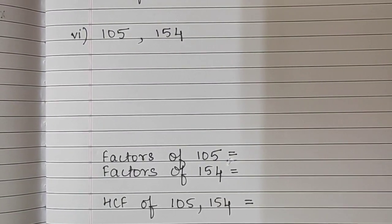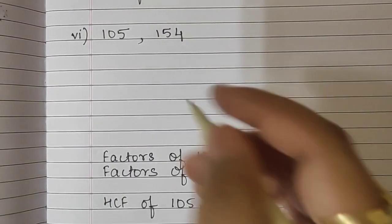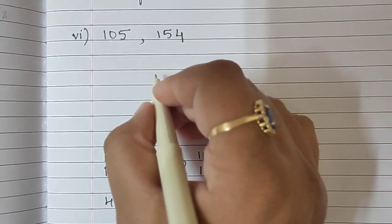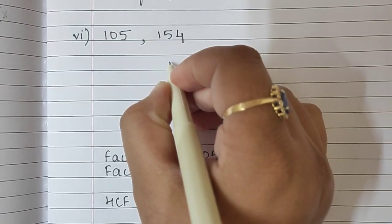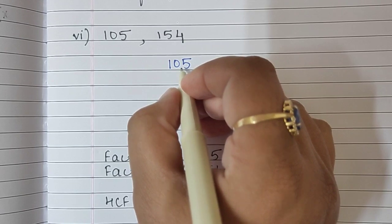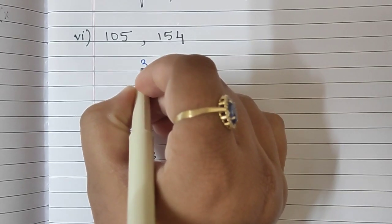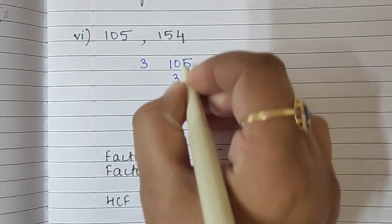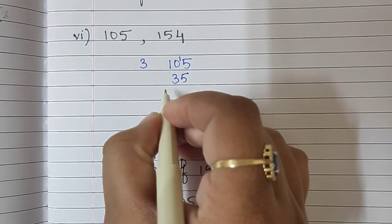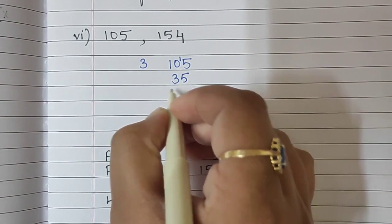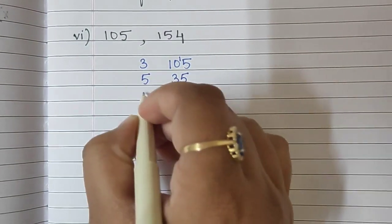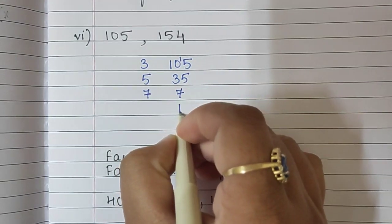Moving to sum number 6. We will find the factors of both these numbers. First is 105 — it's divisible by 3, so we begin with 3. 3 thirty-fives are 105, 5 sevens are 35, and 7 ones are 7.